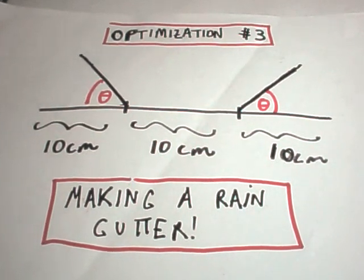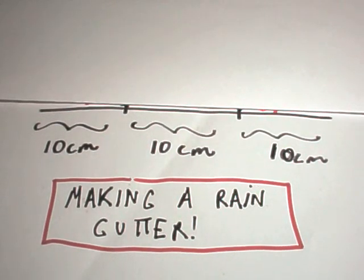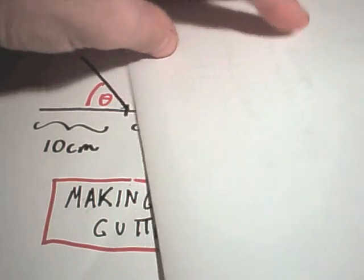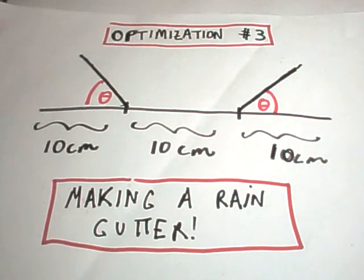The basic idea is you've got a piece of metal that's 30 centimeters long, so I've broke it up into three sections of 10 centimeters each, and what we're going to do is we're going to take the left side and we're going to bend it up, and then we're going to do the same thing with the right side. We're bending the metal up to get this new shape that we have here.